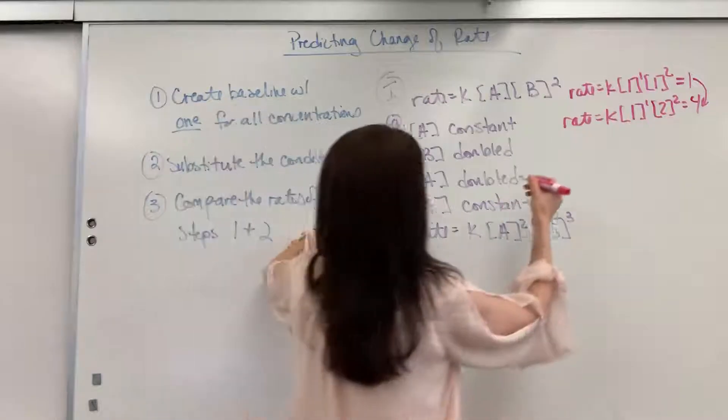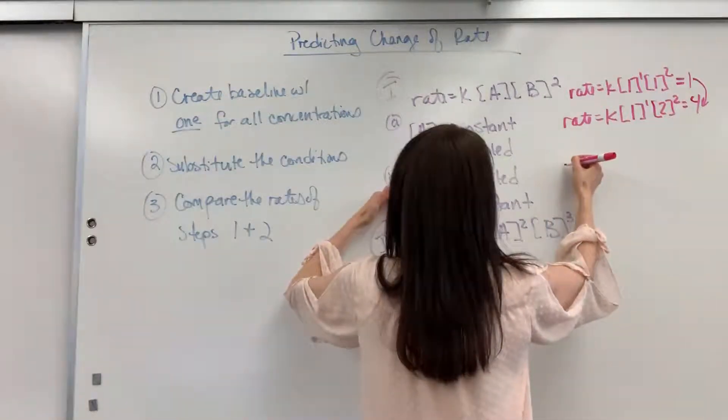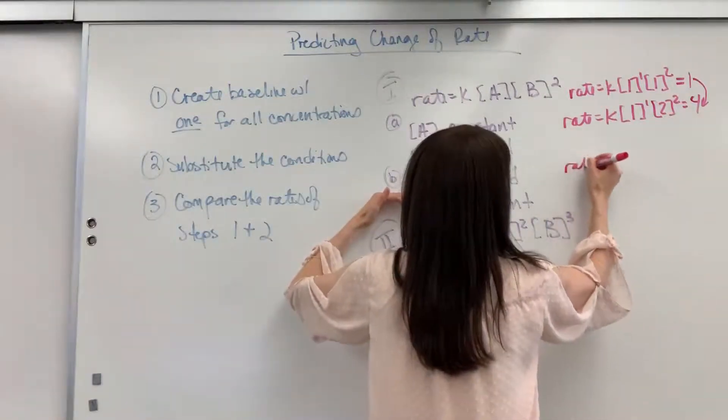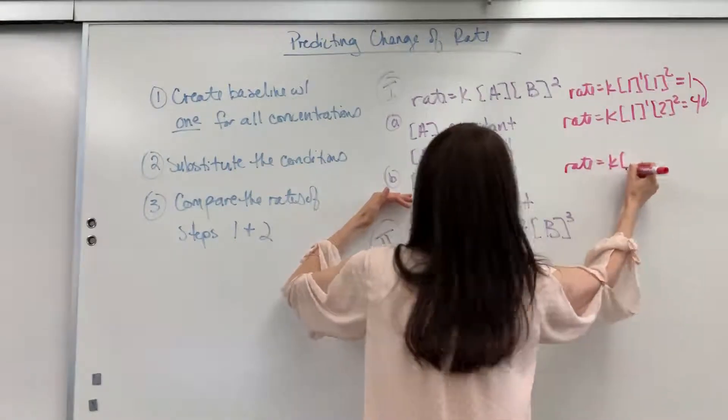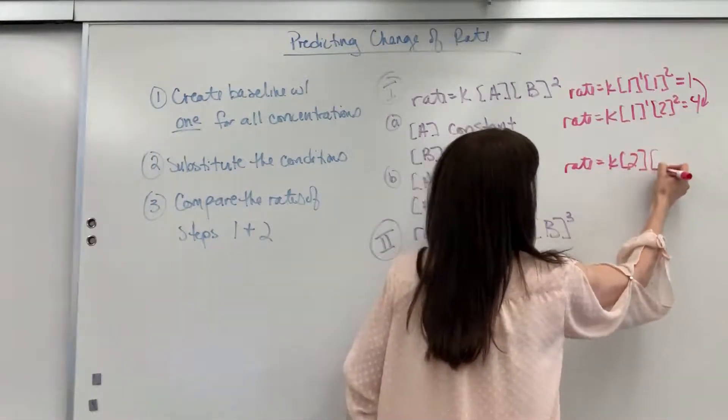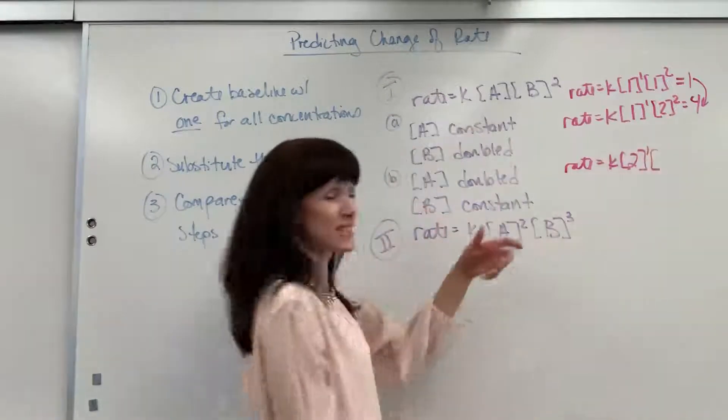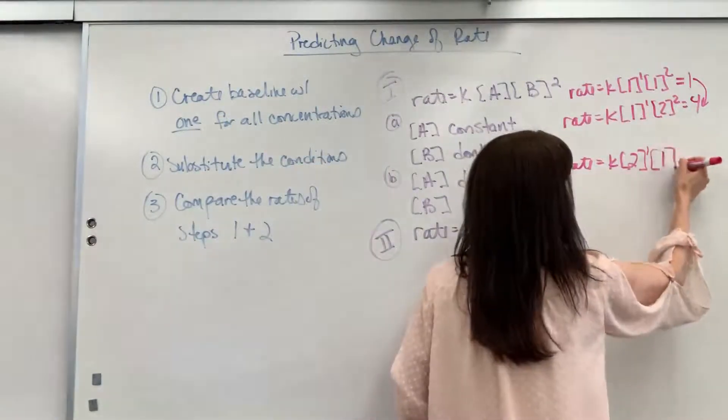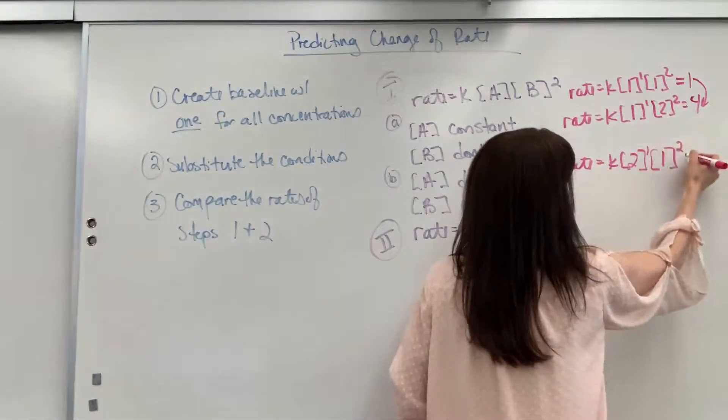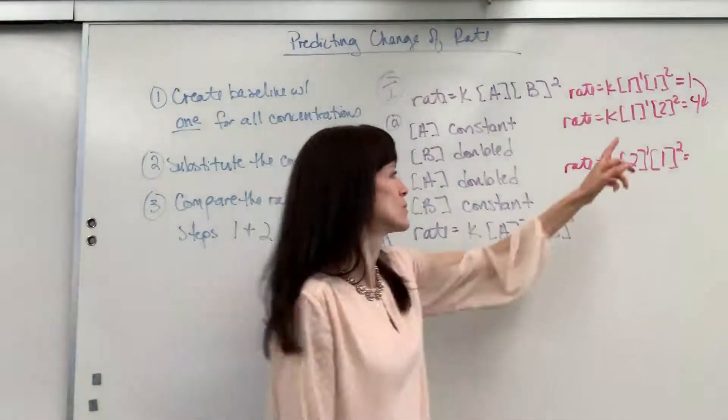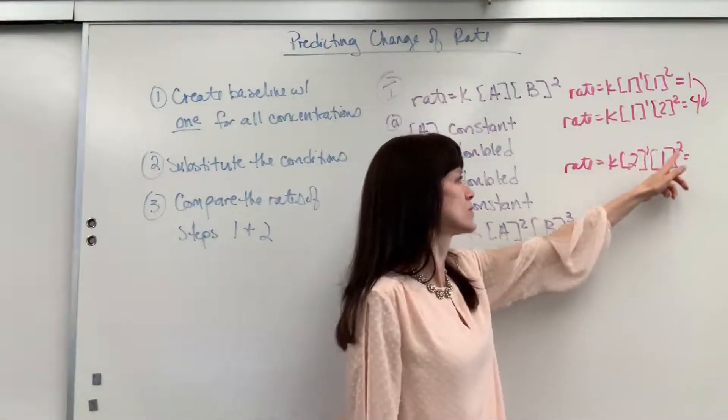So let's go ahead and do this. Let's have the rate of A will double, so that will become a 2 to the 1, and B is held constant. So B is still 1, and that one was to the second order, so it's squared. So 2 to the 1 is 2. 1 squared is 1. 2 times 1 is 2.